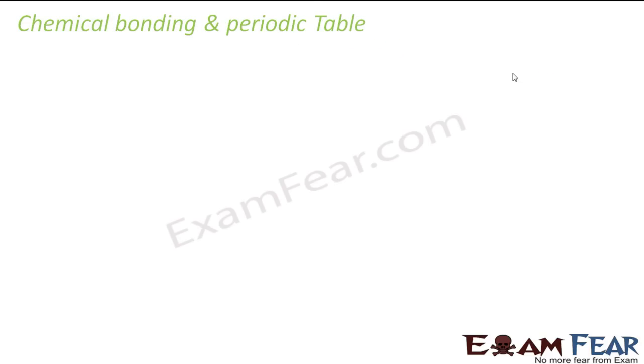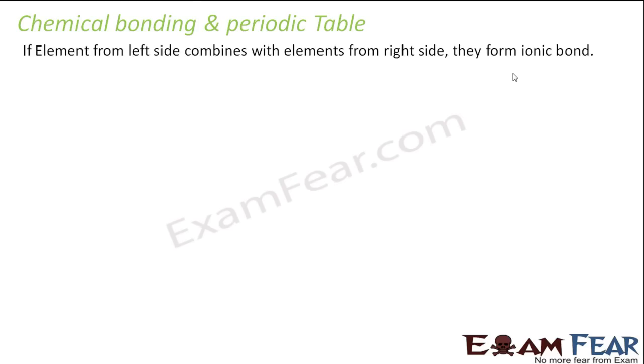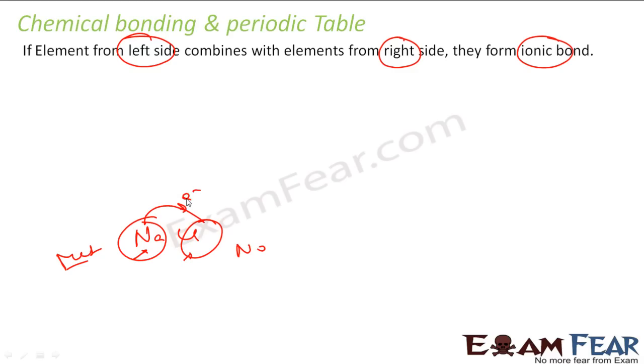There is a relation between the chemical bonding and the periodic table also. So observe that the left side element combines with the right side element and they form ionic bond. For example NaCl. This is on the left, this is on the right. Because this is generally metal and this is generally non-metal. This wants to give electron and this wants to take electron. So there is a transfer of electron happens between these and they form ionic bond.